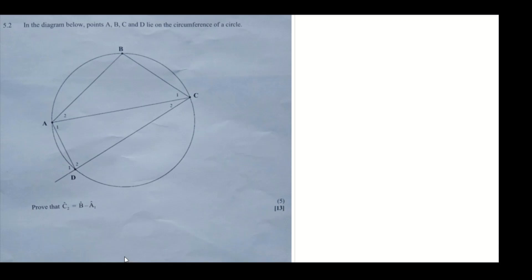Hi guys, so now we're going to be doing paper two of the June 2023 past paper — or the paper that you guys wrote recently. I just chose this interesting question here, as I'm currently looking for interesting questions that you guys wrote about. What I love about this one is that there's little information but higher marks — it's five marks. You have to work a bit, but it's not really much. You're just manipulating the problem to get to the final answer. So let's take a look at the question and solve it.